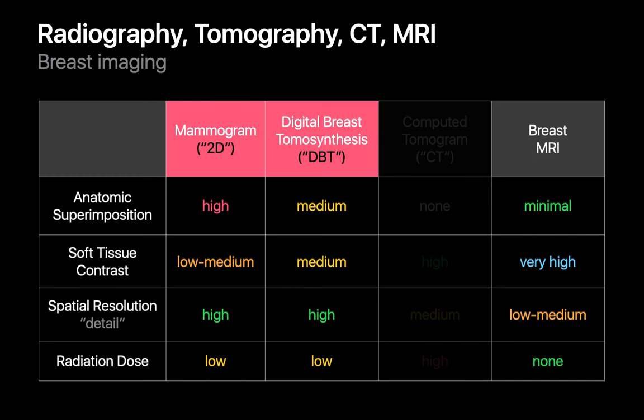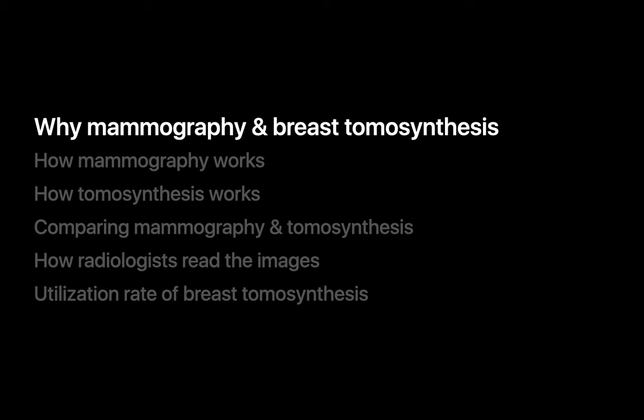In practice, standard 2D mammography and breast tomosynthesis are the main workhorses of breast imaging. Breast MRIs tend to be a troubleshooting modality used judiciously in a small number of specific scenarios. Not only do breast MRIs take a much longer time to perform, they're also plagued by lower specificity and lower sensitivity in some women, which can sometimes generate more questions than answers. So that's why we predominantly rely on standard 2D mammography and breast tomosynthesis.